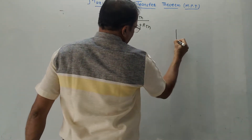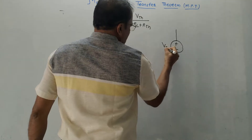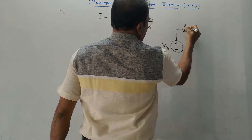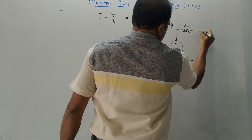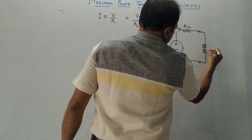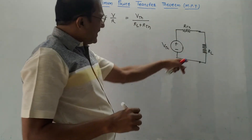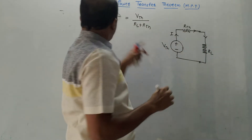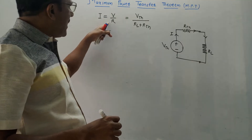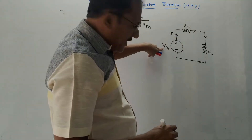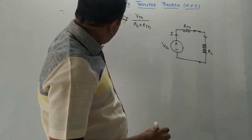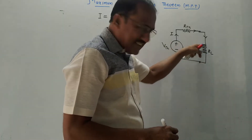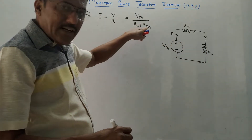Refer to the Thevenin's equivalent diagram. We have one voltage source VTH in series with Thevenin's resistance RTH, and then the load resistance RL is connected. From this diagram, if this is the current flowing through the circuit, that is current I, we know the basic formula I equals V upon R. VTH is the only voltage source, so I have written VTH in place of V. These two resistors are in series, so it becomes RL plus RTH.